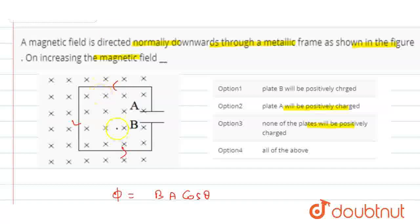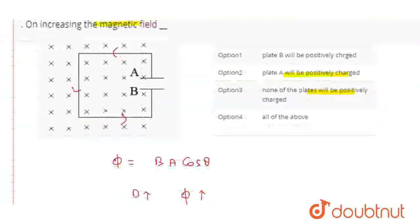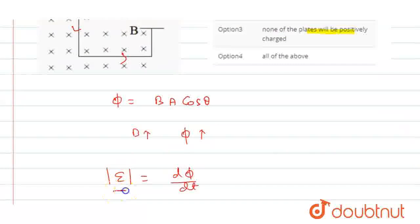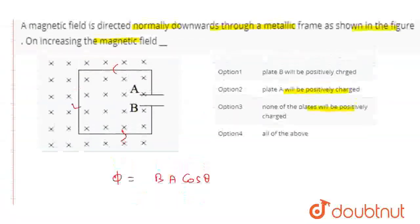Then the induced magnetic field will come out. Since the increasing magnetic field lines are going downward into the frame, the induced field opposes this by pointing outward. If anti-clockwise doesn't work, we use clockwise. Based on the correct direction, the current flows accordingly.